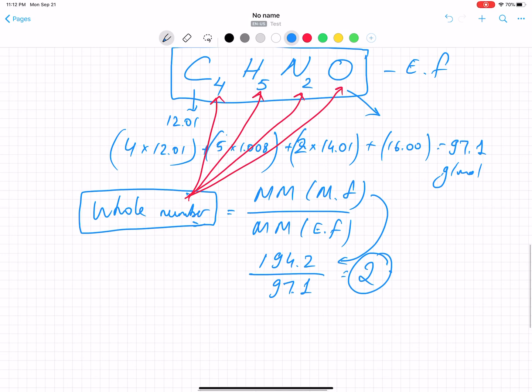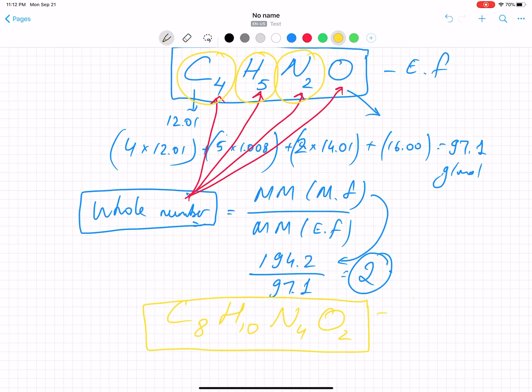So this 2 should be multiplied by the indexes. And if I multiply C4 by 2, that will be C8. H5 multiplied by 2, H10. And 2, same, 4 for nitrogen. Oxygen is 1 multiplied by 2, so 2. We found our molecular formula of caffeine, C8H10N4O2.